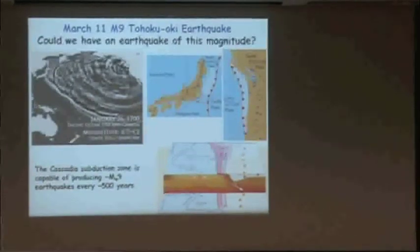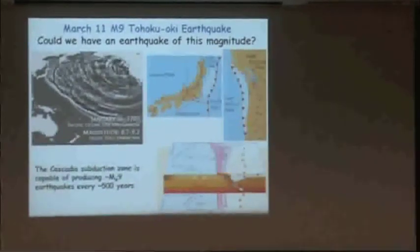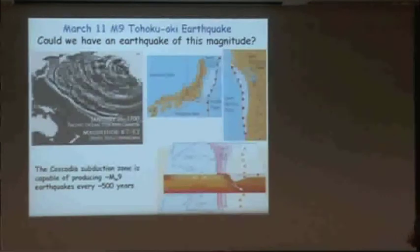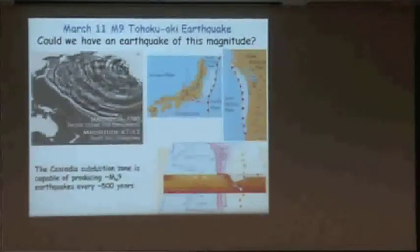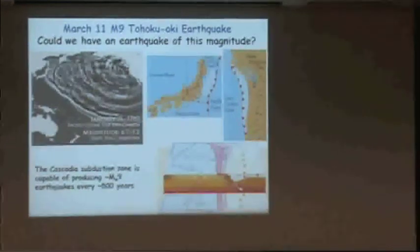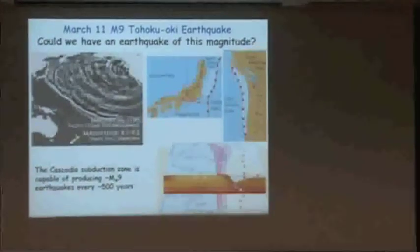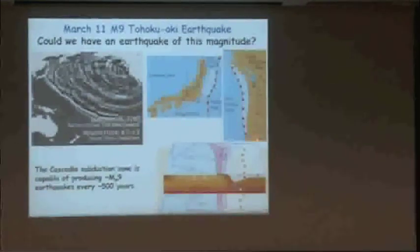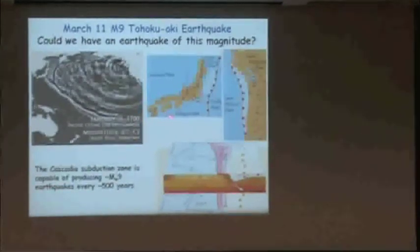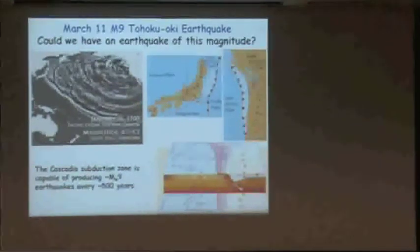Most of northern California is a strike-slip regime with a transform fault. But the northernmost part is a subduction zone north of Cape Mendocino. The most active region in northern California has an average of a magnitude 6 or greater earthquake every five years. The Cascadia region is a subduction zone — the volcanoes are there because of the subduction zone — very much like Japan, and it could produce a magnitude 9 earthquake if the entire fault from Cape Mendocino all the way up to Vancouver Island were to rupture at once.